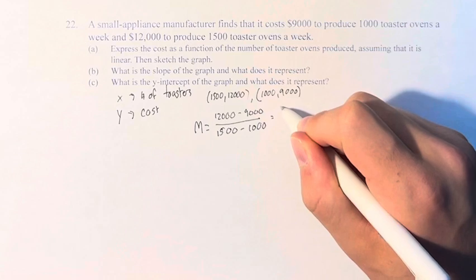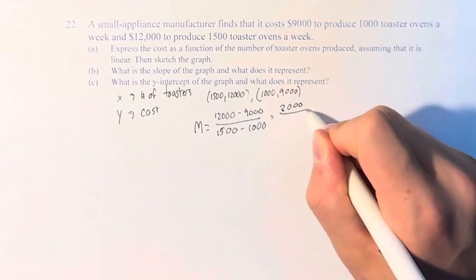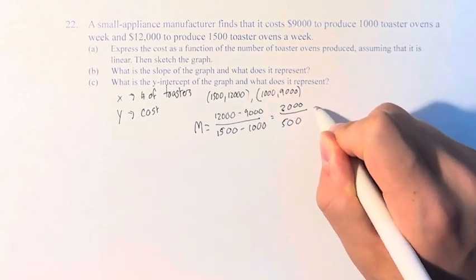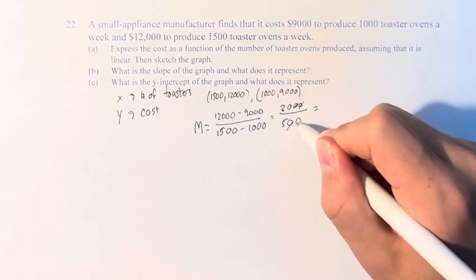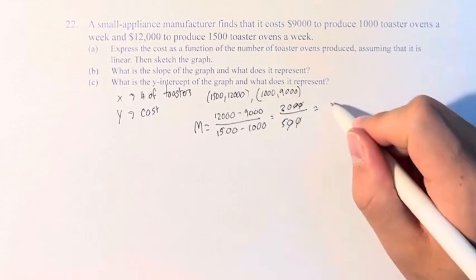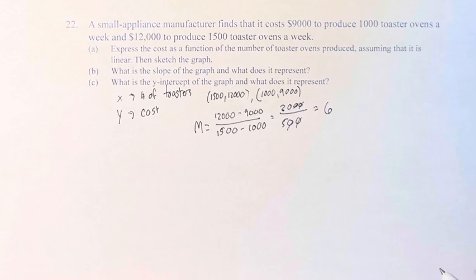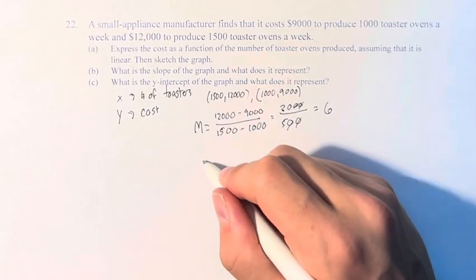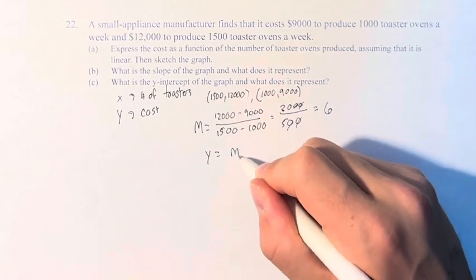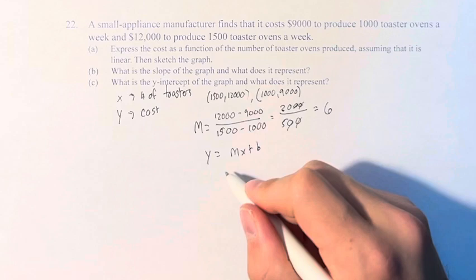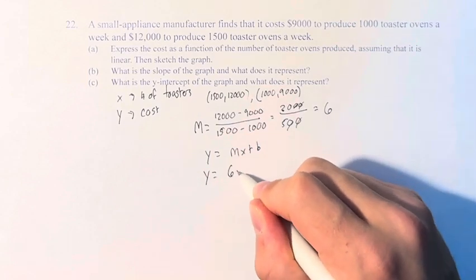12,000 minus 9,000 is 3,000. 1,500 minus 1,000 is 500. These cancel. 30 divided by 5 is 6. So now we have our function y equals mx plus b. We now know m, our slope is 6.